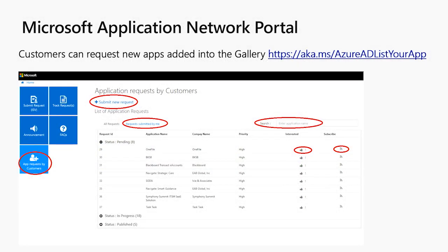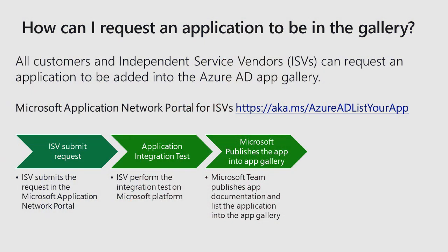This is the Microsoft Application Network Portal and how it looks. There is a separate tile where a customer can request an app and submit a request. They can also like and subscribe to feeds where other customers have already requested an app. If they submit their own request, they can track it through the Track Request page. For ISVs, they can directly submit a request in the portal along with their integration details. Microsoft will configure the app and provide a way for vendors to test the integration on the platform. Once testing is successful, Microsoft and the ISV jointly create a document and publish it on the docs website, after which Microsoft publishes the app into the gallery and it becomes available for all mutual customers.